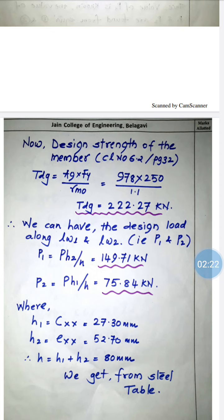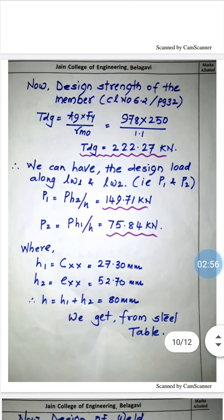With total design load 222.27 kN, we calculate P1 and P2 — forces carried by welds lw1 and lw2. P1 = P × h2 / h and P2 = P × h1 / h. Here h1 = cxx = 27.3mm and h2 = exx = 52.7mm, and total h = h1 + h2 = 80mm. These values are obtained from the steel table for ISA 80×50×8 unequal angle.